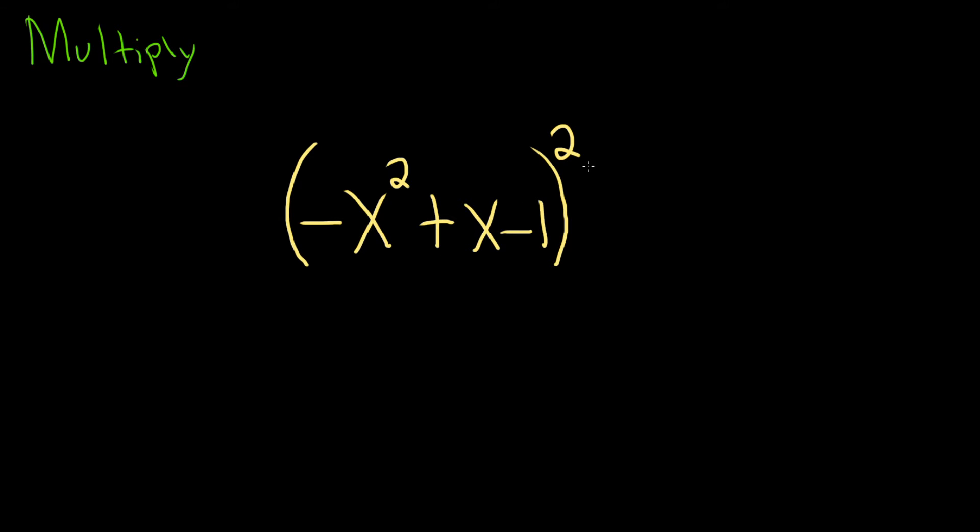So a good first step maybe is when you see these two, just write it twice. So this is minus x squared plus x minus 1 and then over here you have the same thing minus x squared plus x minus 1.